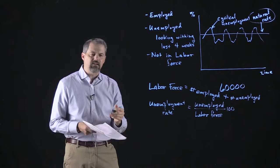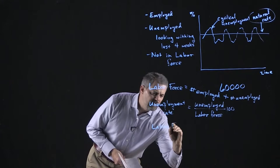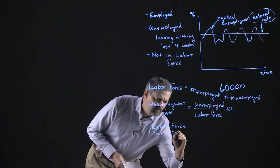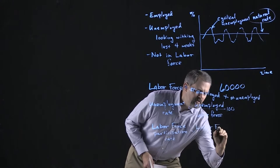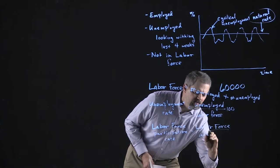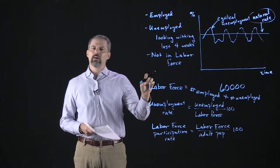We can also think about the labor force participation rate. It's calculated as the labor force divided by the adult population, multiplied by 100 to turn it into a percent. That tells us the percent of the total adult population that's actually participating in the labor force.